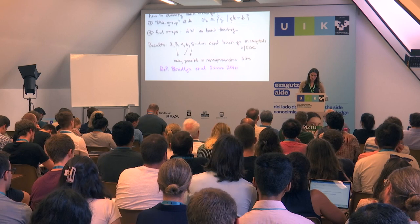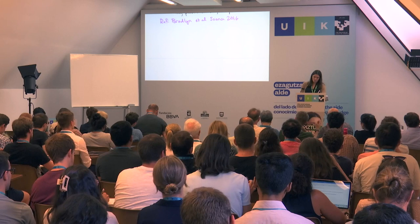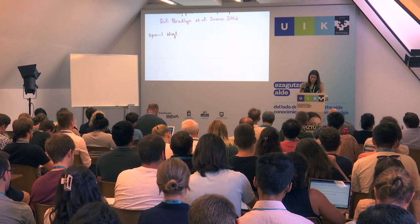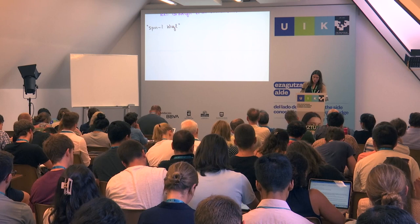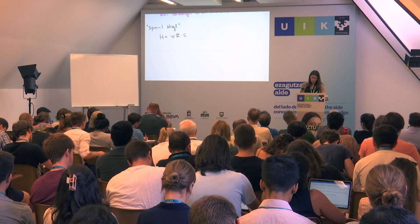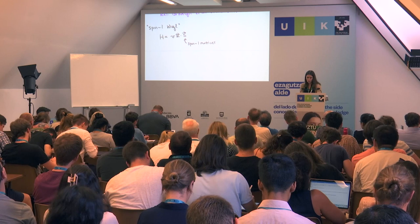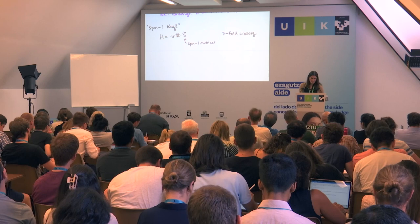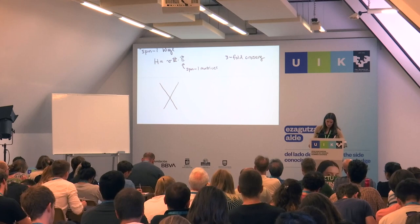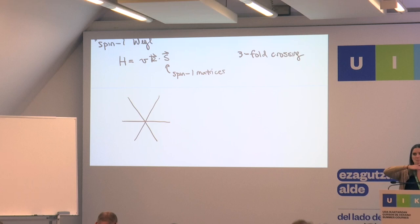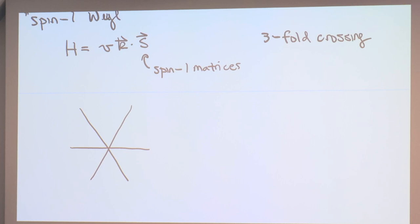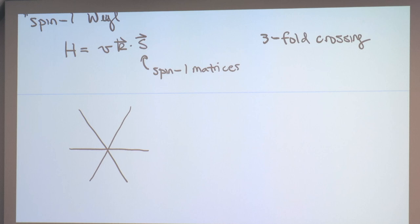One of the most interesting of these crossings is the spin-1 Weyl fermion, which I mentioned yesterday. This is a threefold band crossing. The Hamiltonian is very similar to the Weyl Hamiltonian, but now the S matrices instead of being Pauli matrices are the spin-1 matrices. To linear order it looks like a Weyl point with a flat band crossing in the middle. If you add higher-order terms, that flat band in the middle will have some dispersion. We can compute the Chern number: if the Fermi level is up here, the Fermi surface has a Chern number of two; at the other level it's minus two, and in the middle band it's a Chern number of zero.